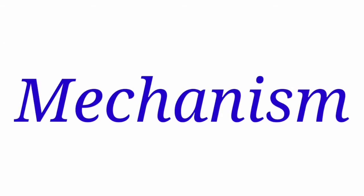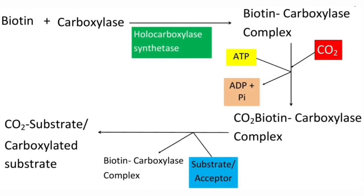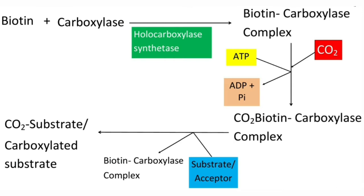Now we will see the mechanism of carboxylation. Carboxylases are the enzymes which catalyze the carboxylation reactions, but the carboxylase itself cannot catalyze the reaction — it requires the help of a coenzyme called biotin. So carboxylase is the apoenzyme and biotin is the coenzyme. Biotin is the non-protein part required for the activity of carboxylase, and carboxylase is the protein part. These two react to form a biotin-carboxylase complex, catalyzed by holocarboxylase synthetase.